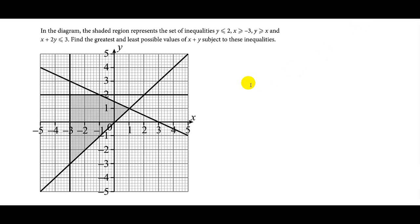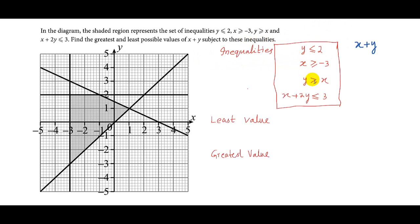This is a question from linear programming. In the diagram, the shaded region represents the set of inequalities. Find the greatest and least possible values of x plus y subject to these inequalities. After finding this shaded region, we have to find the least and greatest values of this expression.